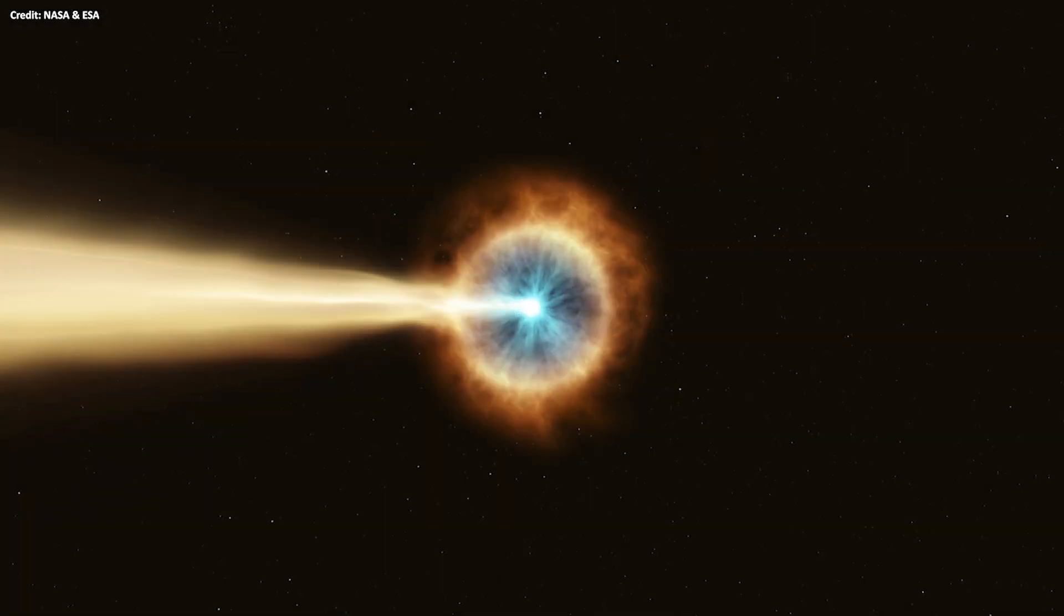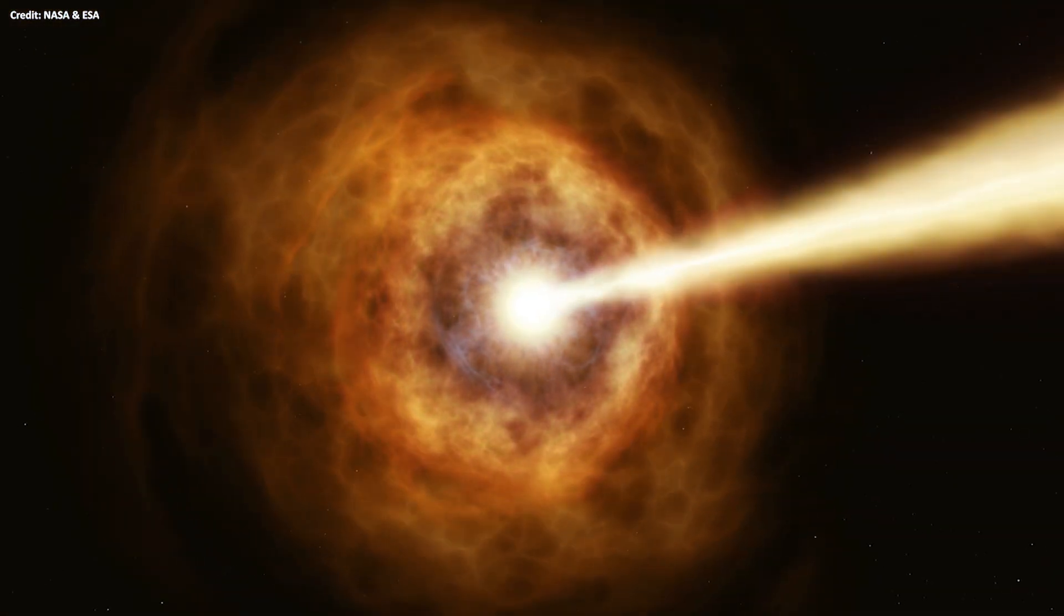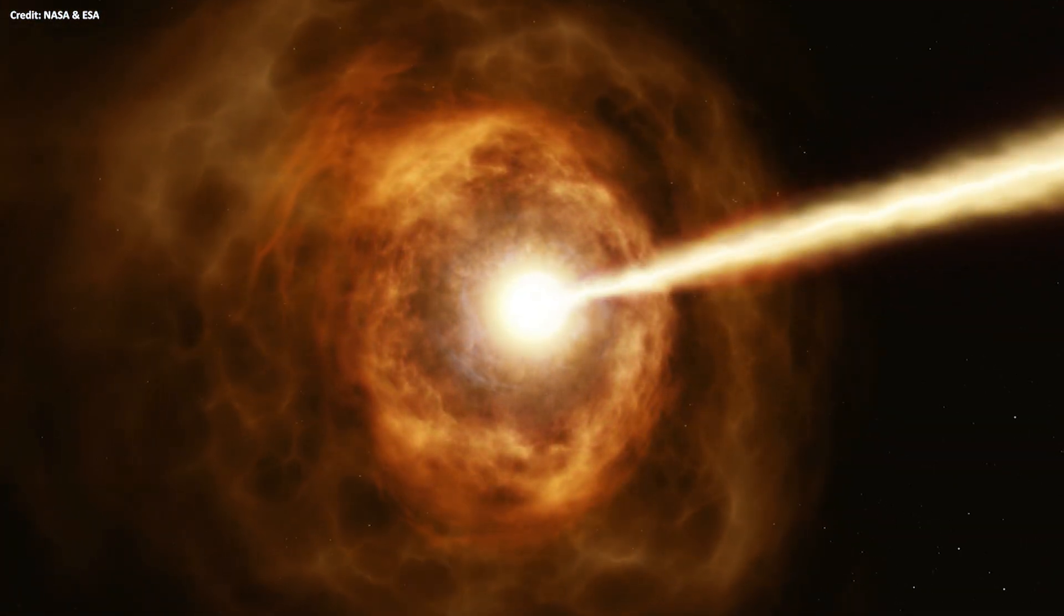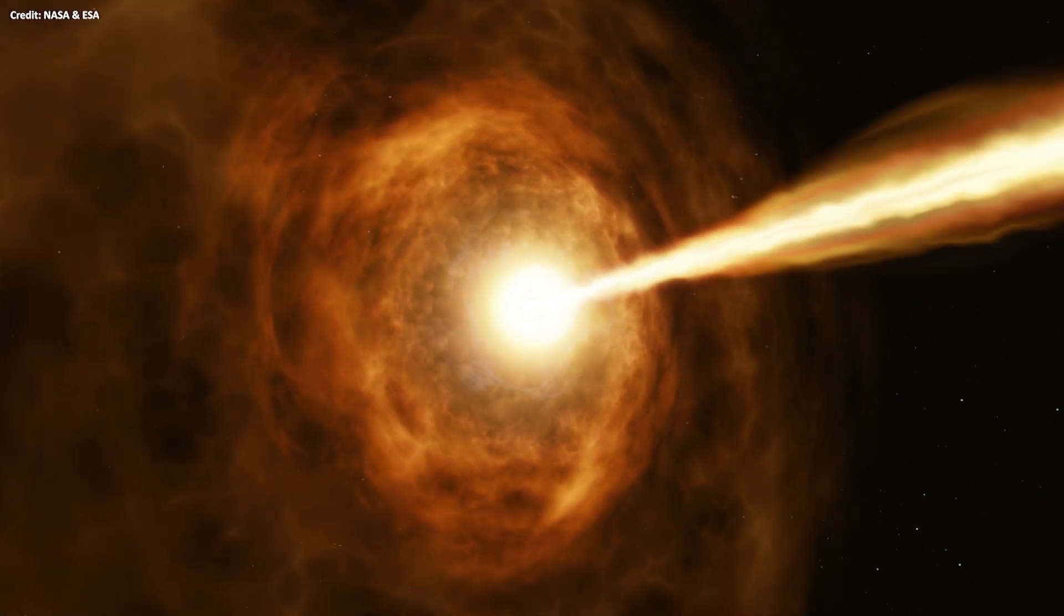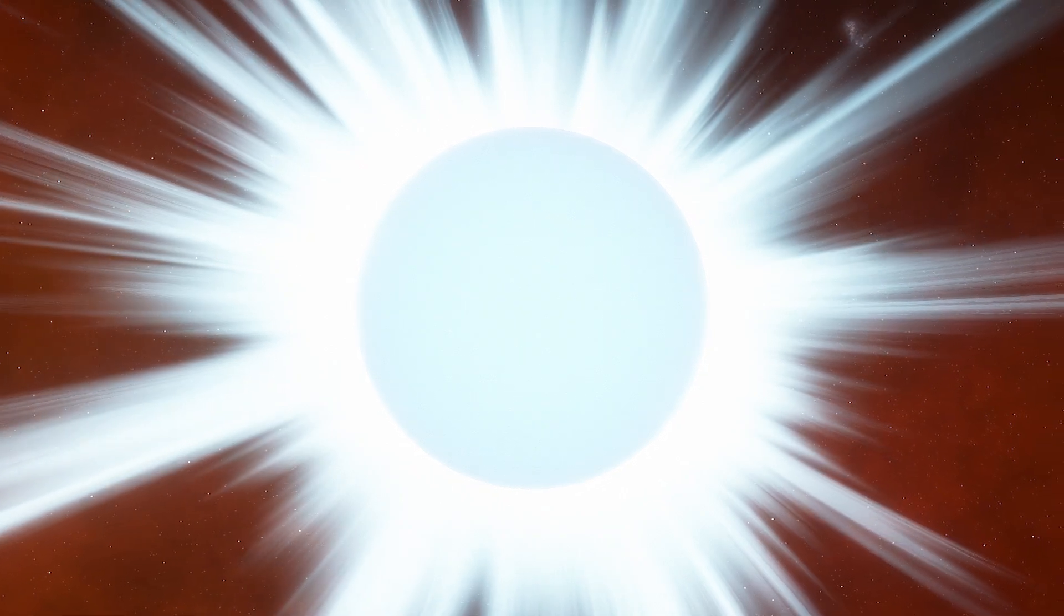Actually, the types of supernovae that cause gamma ray bursts are known as hypernovae. They occur when wolf-rayet stars die. These types of stars are supermassive and extremely hot.